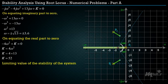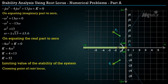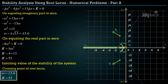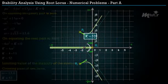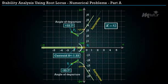K = 52 is the limiting value of K for the stability of the system. The crossing points of the root locus on the imaginary axis are ±j3.6. Mark these crossing points, draw lines perpendicular to the asymptotes, and connect the angle-of-departure points to the crossing points to complete the root locus sketch.